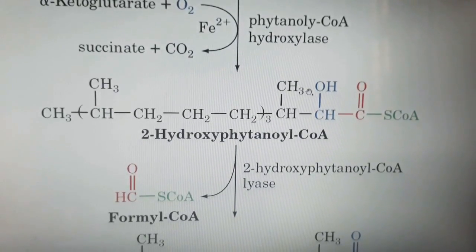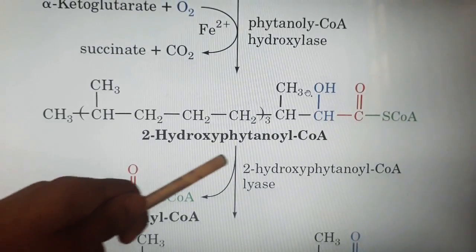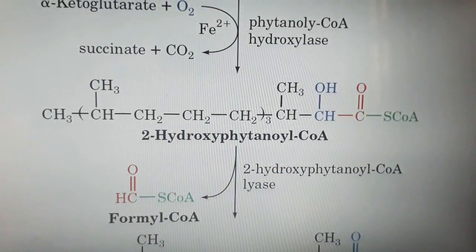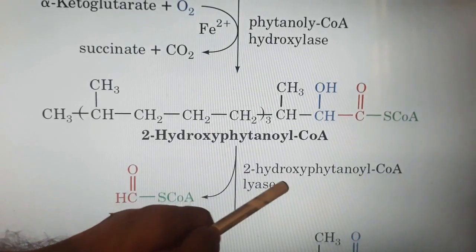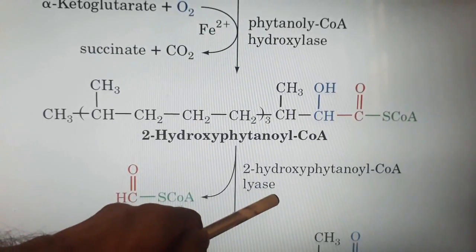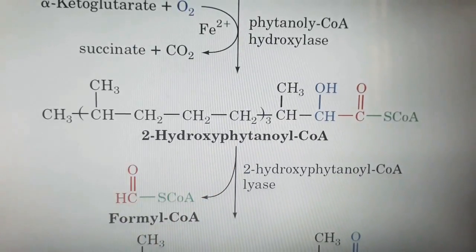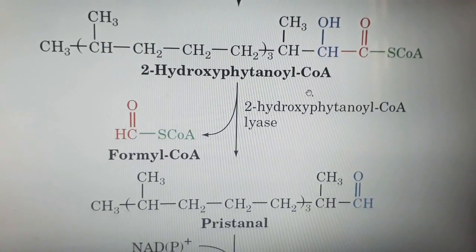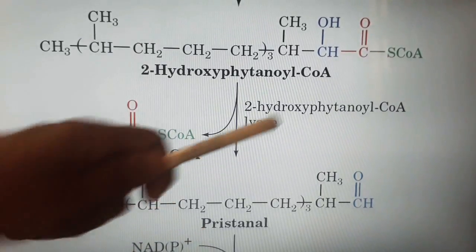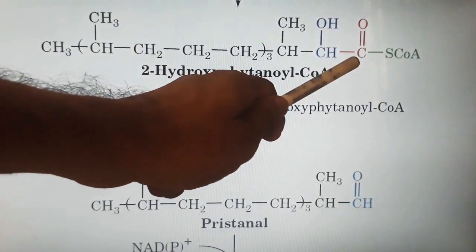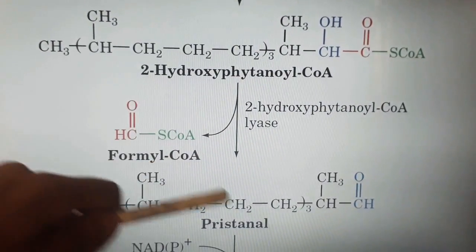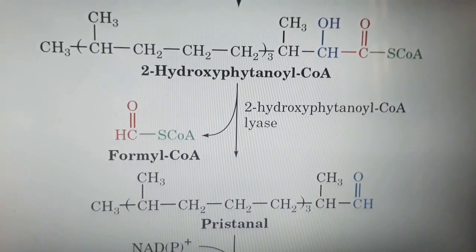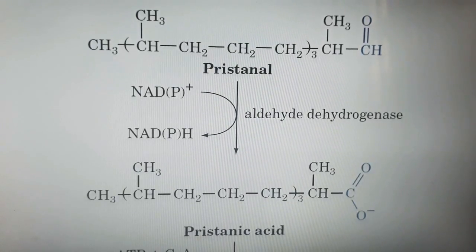In the next step, the 2-hydroxy phytanyl-CoA (the hydroxylated phytanyl-CoA) is decarboxylated by an enzyme known as 2-hydroxy phytanyl-CoA lyase. This enzyme decarboxylates the substrate and converts it into a product known as pristanal. The carboxylate carbon is decarboxylated and released as formyl-CoA, giving the decarboxylated product known as pristanal.